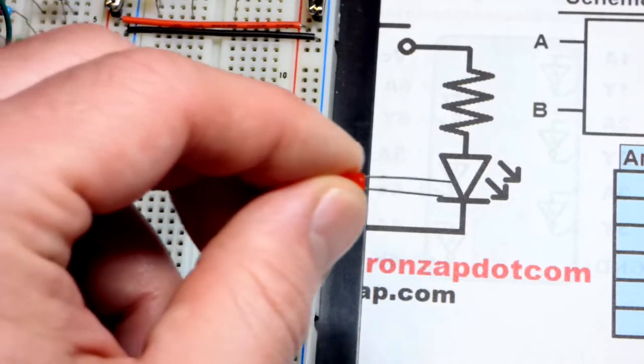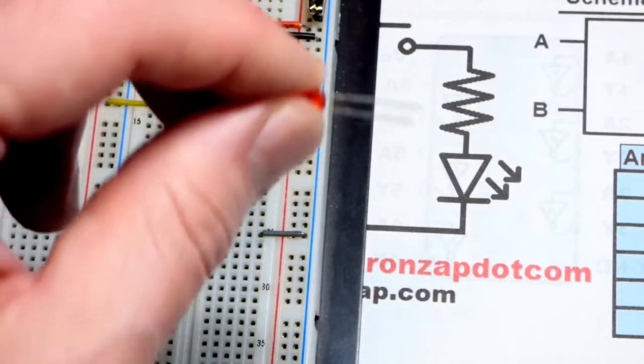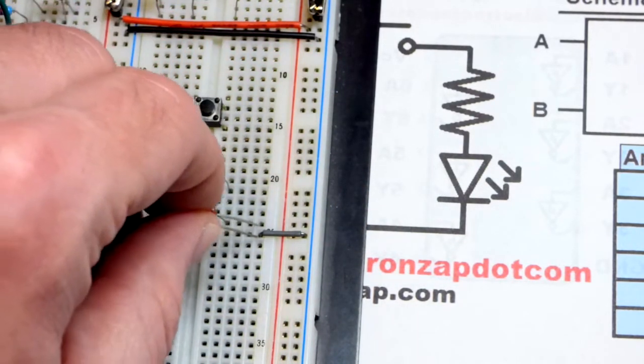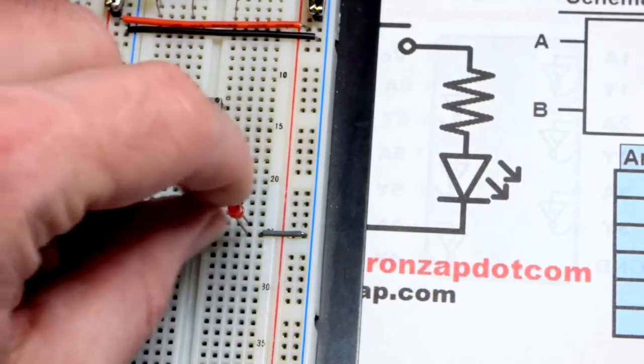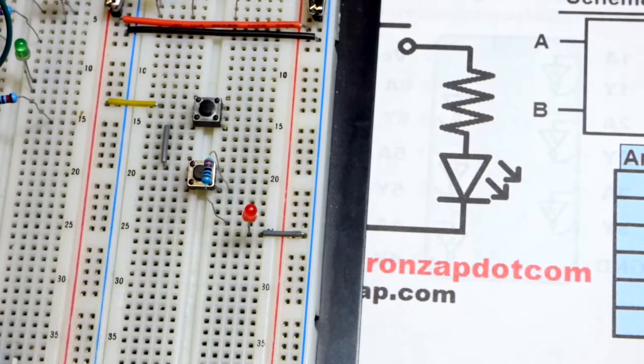The cathode also has a flat edge. If you happen to trim them, not all LEDs have that flat edge though. But a lot of them do. So there we go. We got the circuit.